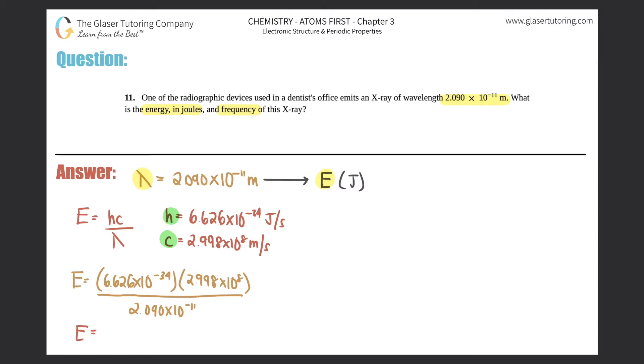So calculator out: 6.626 times 10 to the negative 34th times 2.998 times 10 to the eighth, all over 2.09 times 10 to the negative 11th. This energy, which is per one photon, is 9.505 times 10 to the negative 15th joules per photon. So that's the energy, we got this part.